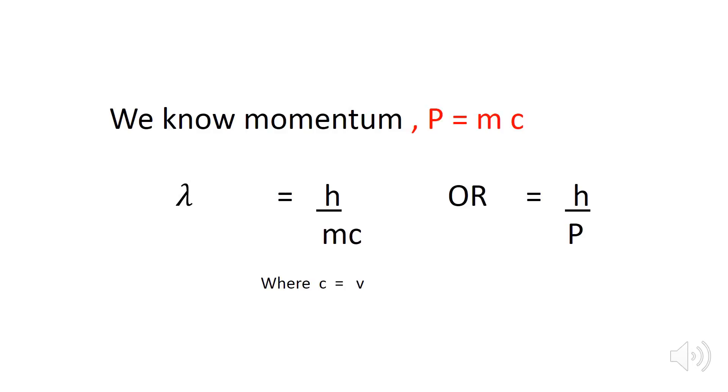We know that momentum P equals mc. So in de Broglie's equation, we can put the value of mc. Now the equation becomes lambda equals h divided by P. Both these are de Broglie's equations.